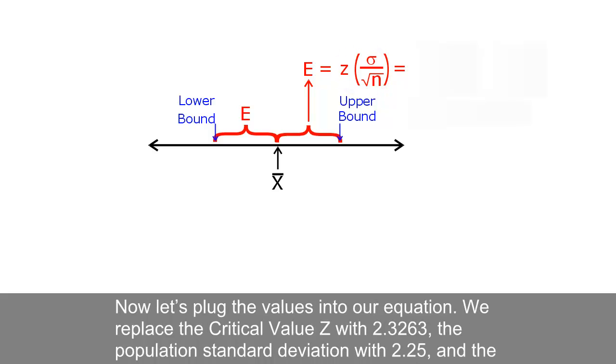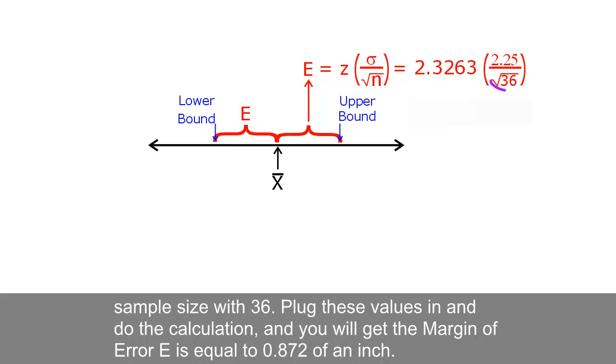Now let's plug the values into our equation. We replace the critical value z with 2.3263, the population standard deviation with 2.25, and the sample size with 36. Plug these values in and do the calculation, and you will get the margin of error E is equal to 0.872 of an inch.